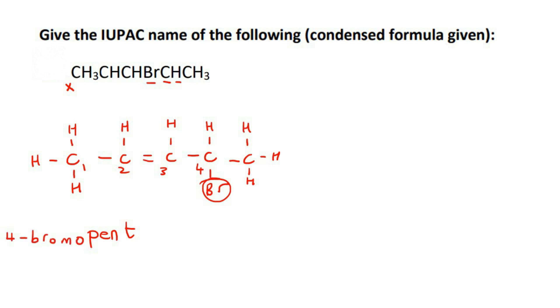And then for alkenes, we'll say that on carbon number two, there is a double bond. So 4-bromo, pent, 2-ene.